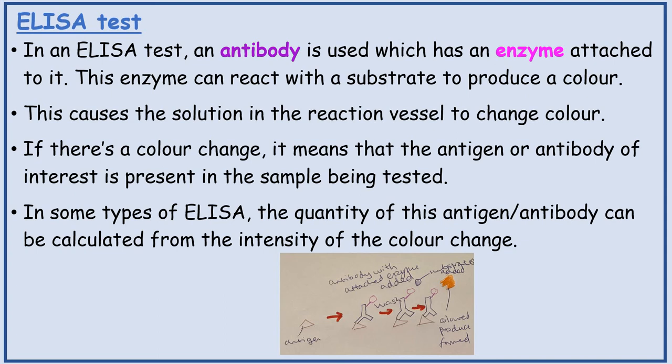In an ELISA test, an antibody is used which has an enzyme attached to it. This enzyme can react with a substrate to produce a colour, causing the solution in the reaction vessel to change colour. If there's a colour change, it means that the antigen or antibody of interest is present in the sample being tested. In some types of ELISA, the quantity of this antigen or antibody can be calculated from the intensity of the colour change.